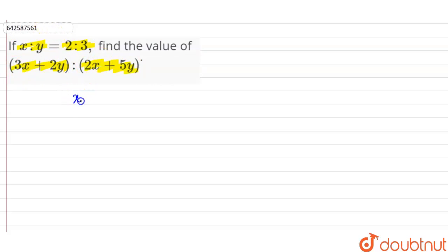So here, x ratio y is given 2 by 3. When we cross multiply, we can say that 3x is equal to 2y, or x is equal to 2 by 3y.